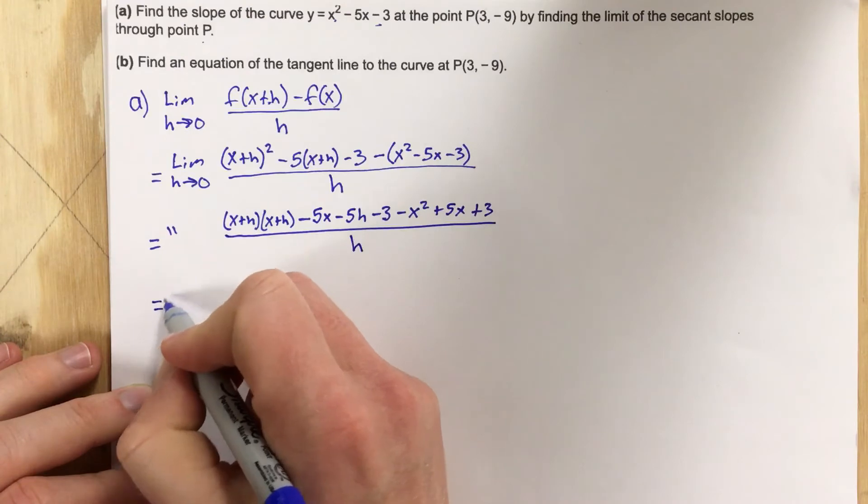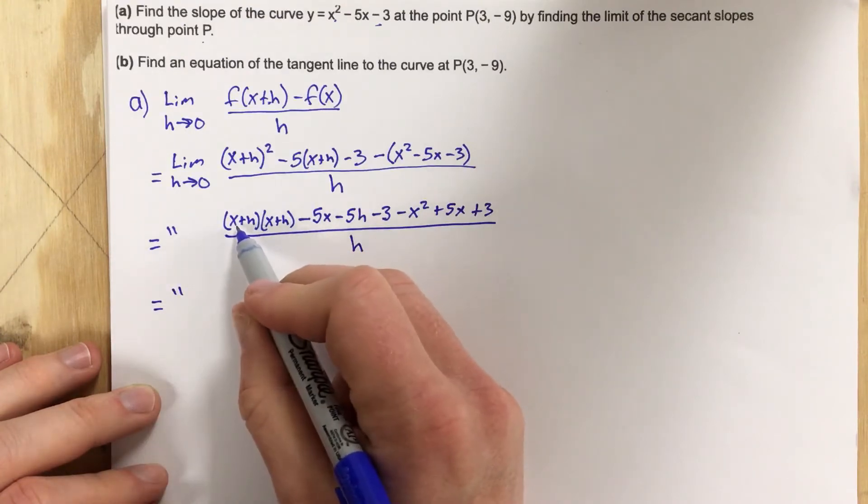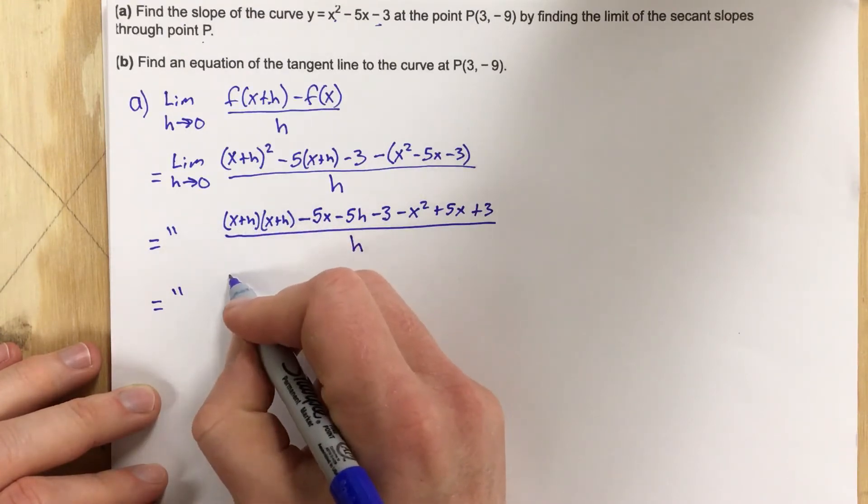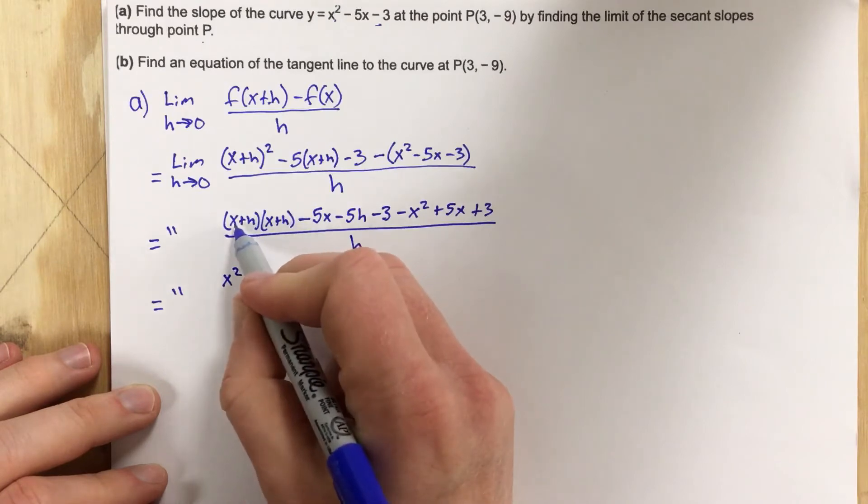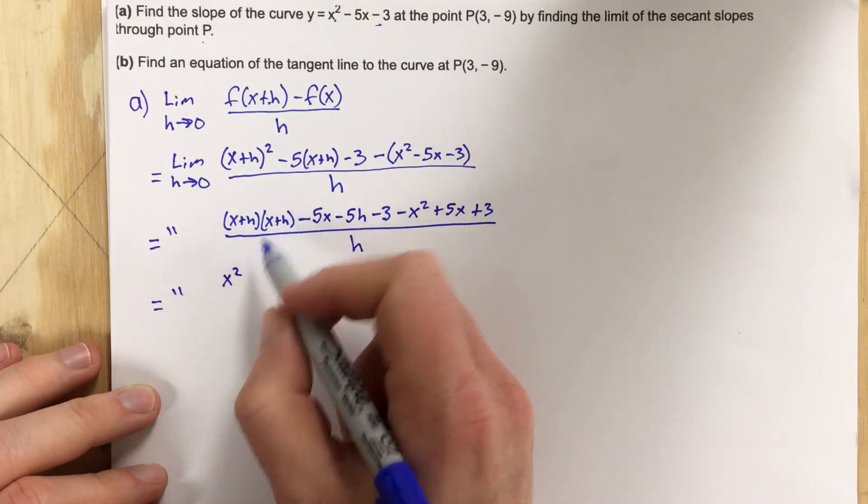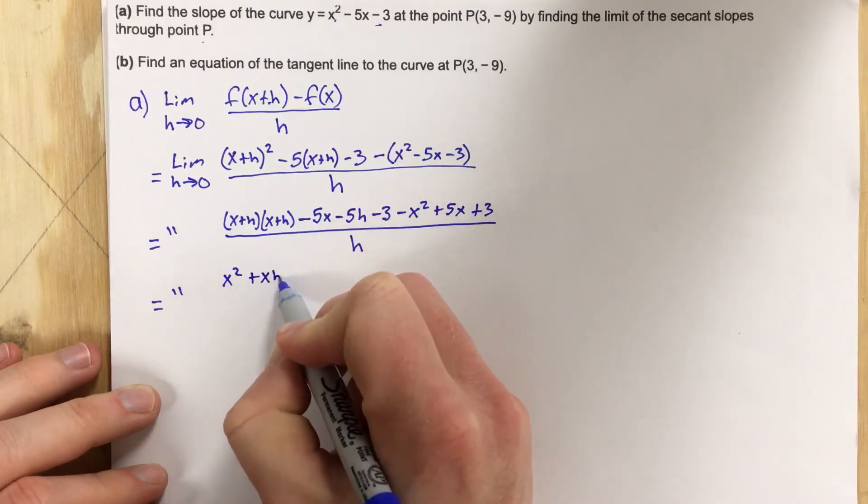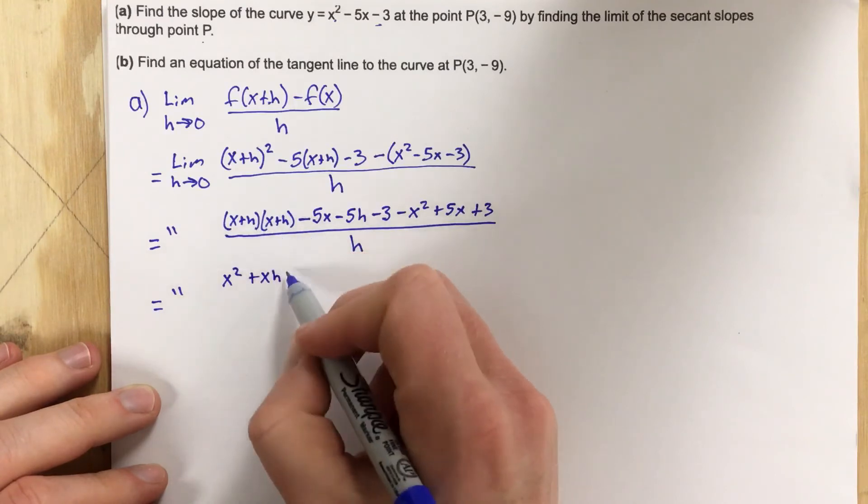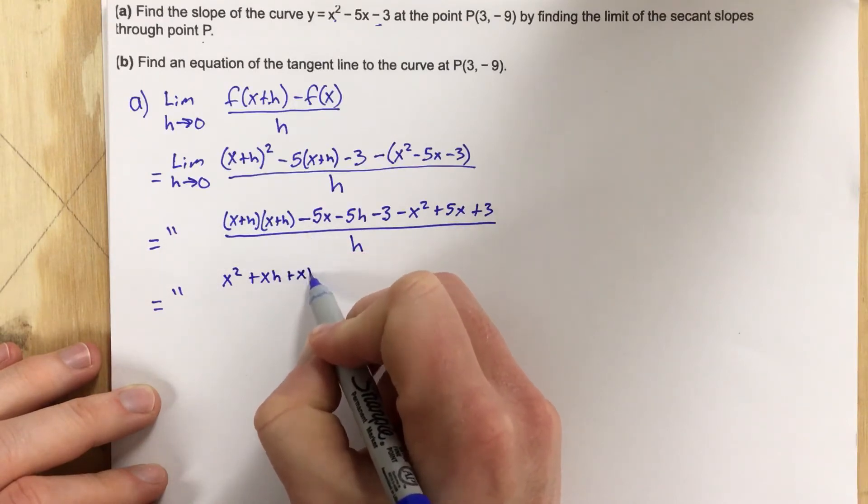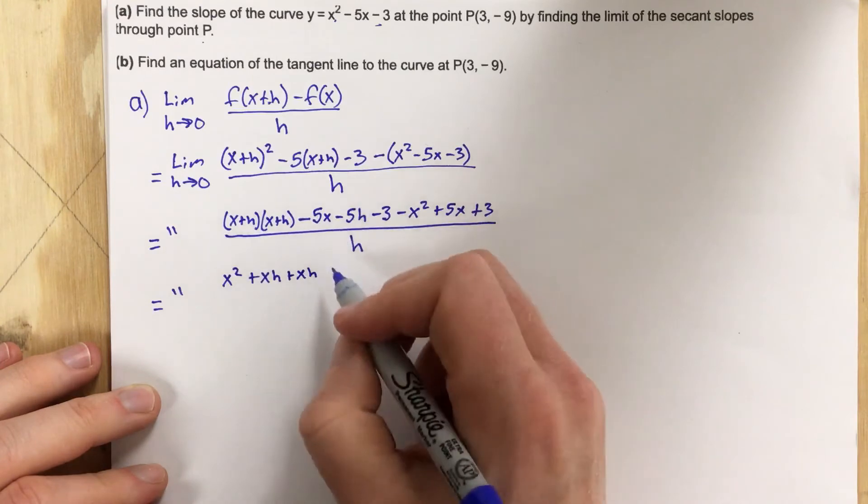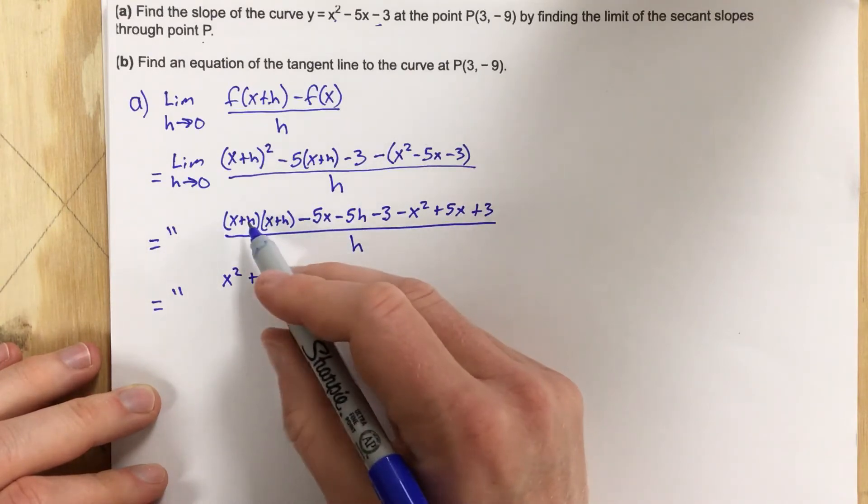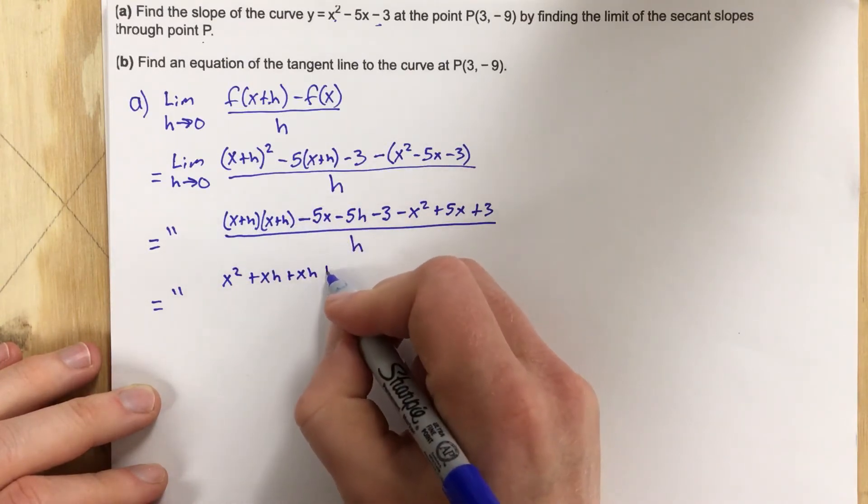As I go through, I can distribute to start with. I'm going to take x times x, which is x squared, x times h, which is xh, h times x, which is just another xh. Remember, you can flip those around. And then h times h is h squared.